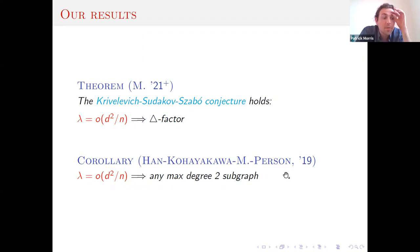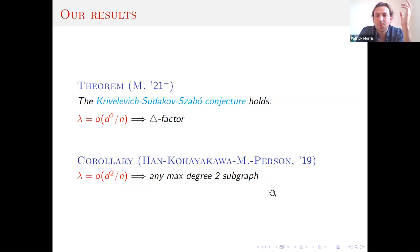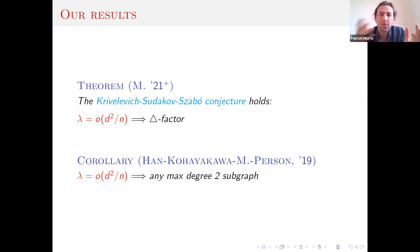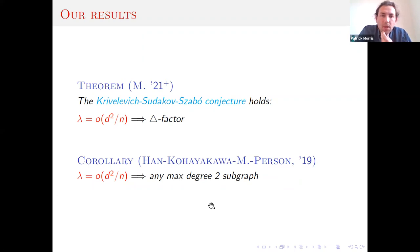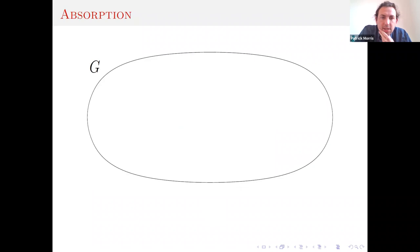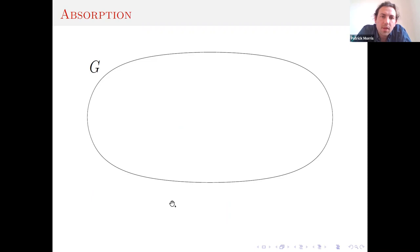For the rest of the talk, I want to give some ideas of the proof. It's fair to say the proof builds on almost all of the results I listed — the previous results towards the conjecture, and many of those ideas came up in the proof. The main idea is absorption.